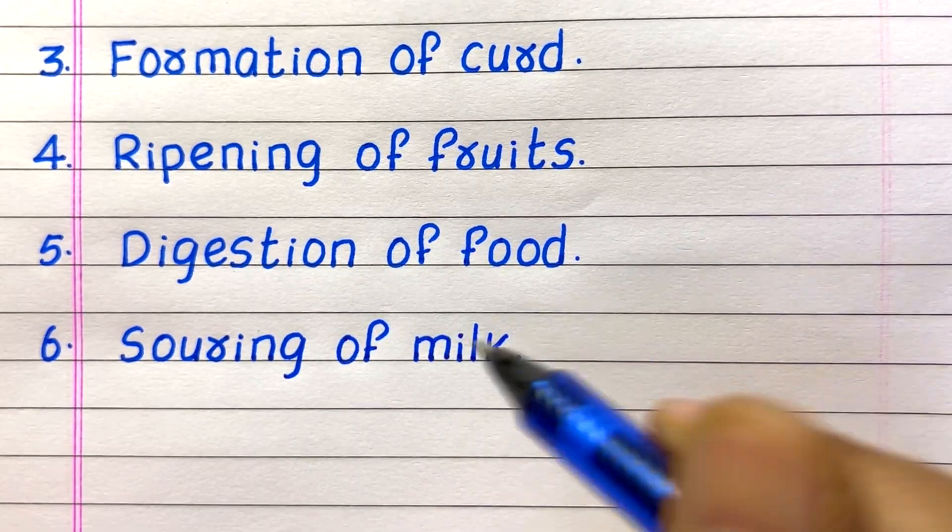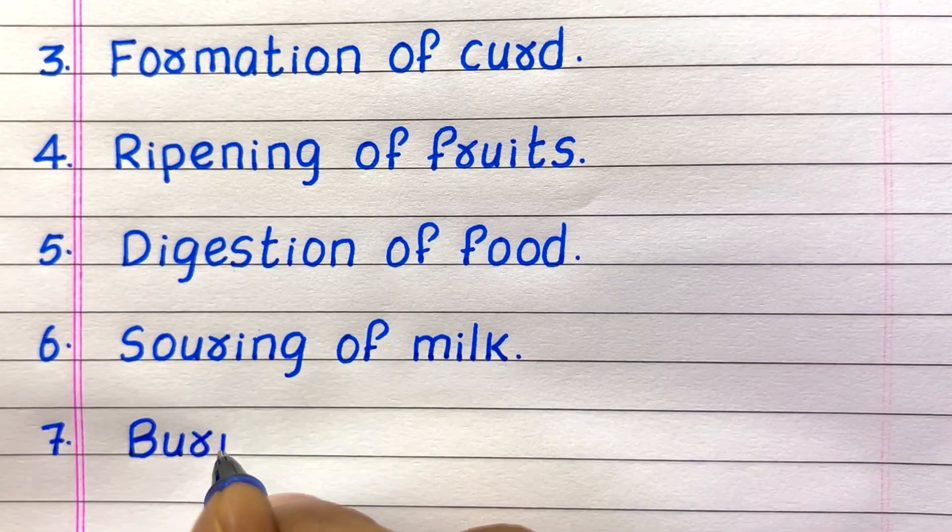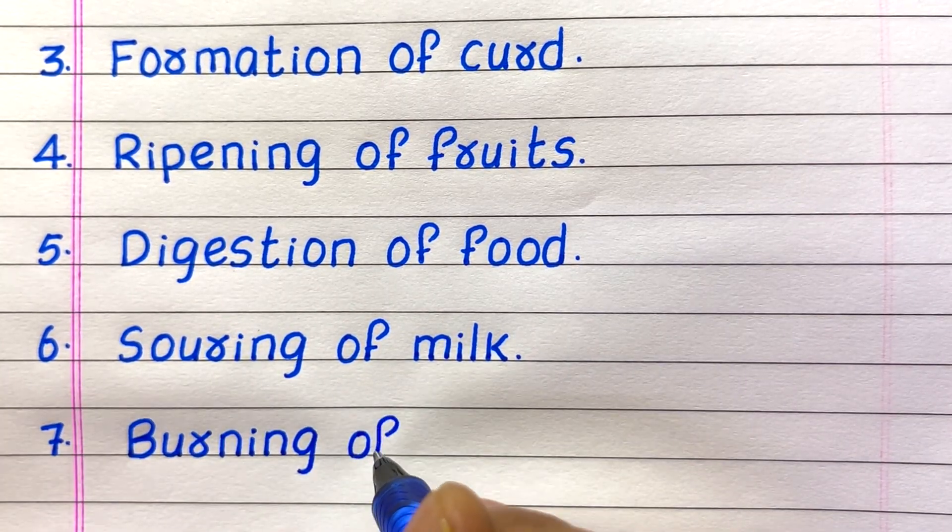Third example of a chemical change is formation of curd. Fourth, ripening of fruits. Fifth, digestion of food.